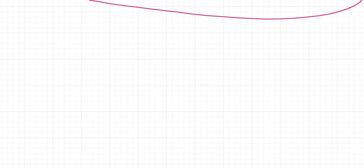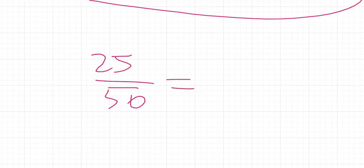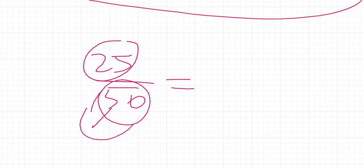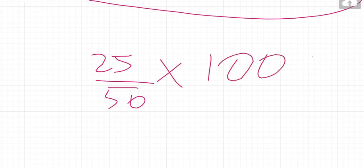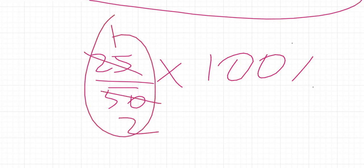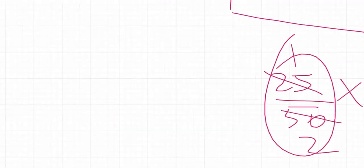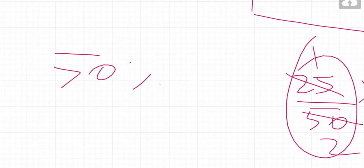Let's use an exam analogy. The exam is marked out of 50 and you got 25. By intuition, 25 is half of 50, so if 50 is the hundred percent of the total marks and you got half, you get half of 100, which is 50%. We can prove it: 25 over 50 times 100 percent equals 50%.